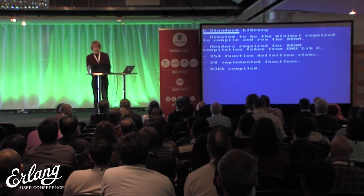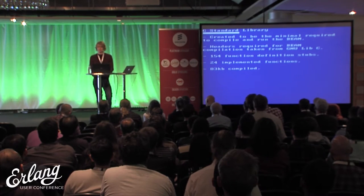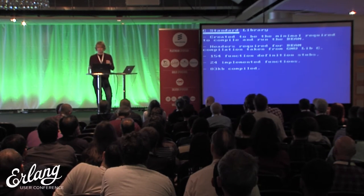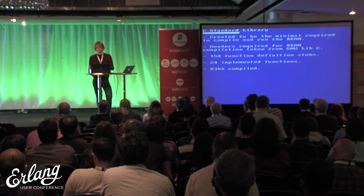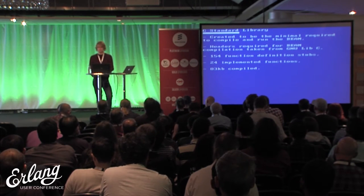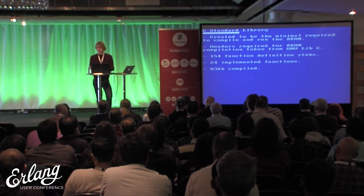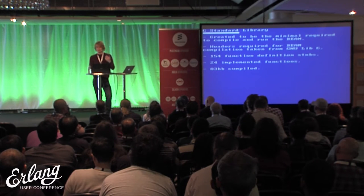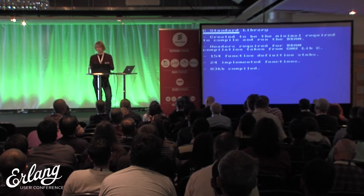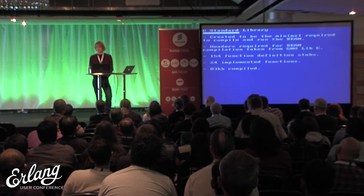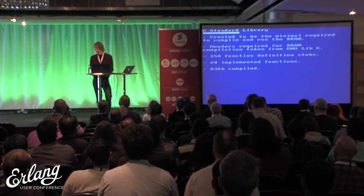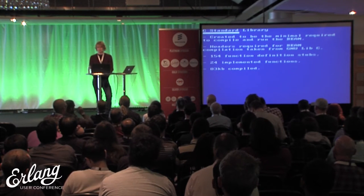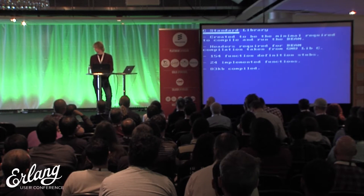The C standard library we use is bespoke. We got the BEAM and tried to compile it in a system with no standard library at all, then went through adding the required headers from GNU libc just to make it compile. We looked at the required functions and implemented stubs — 180 stubs so that the system would compile. Then we ran the system, and every time a stub was called we would implement that function. It turned out you only need about 24 functions to get the BEAM to load and start executing code. The entire standard library — the Unix-like part of our system — is 83 kilobytes.